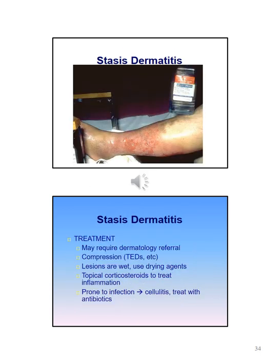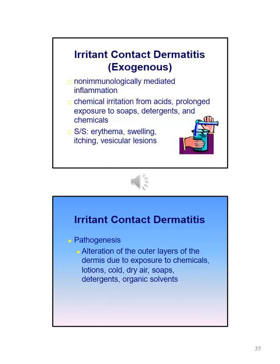Treatment for stasis dermatitis may include a dermatology referral. Other treatments include compression devices such as TED hoses. Since lesions are wet, drying agents are helpful. Topical corticosteroids may be prescribed to treat inflammation. Since these skin disorders are prone to infection, it can lead to cellulitis, which may be treated with antibiotics.